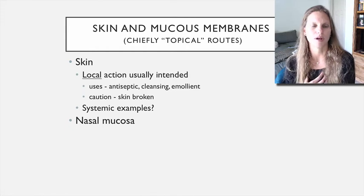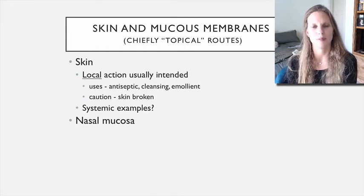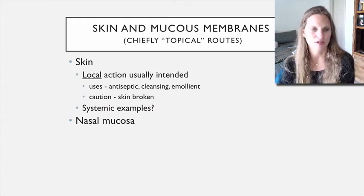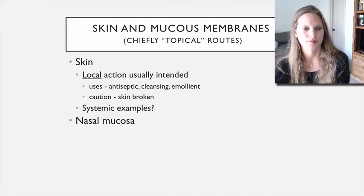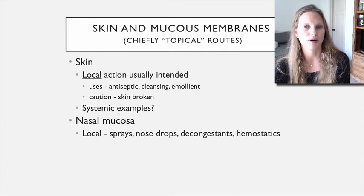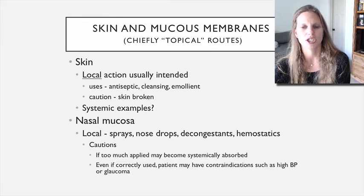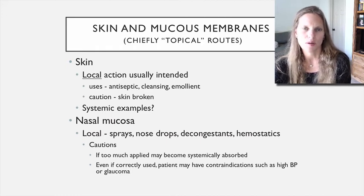Those patches are applied to the skin but with a systemic action. Mucous membranes are another potential topical route of administration. Options include nose drops, sprays, decongestants, and hemostatic agents—things that stop bleeding. In any case, we can get some systemic absorption because the mucous membrane is pretty vascular, so we have to consider that.